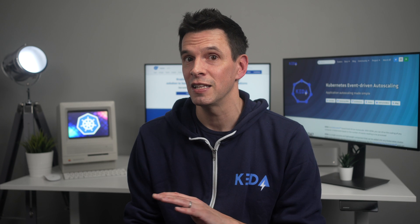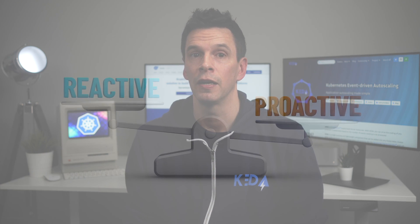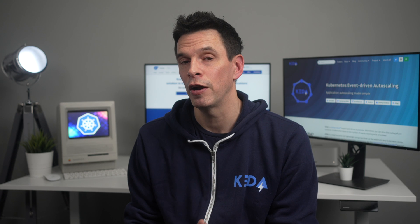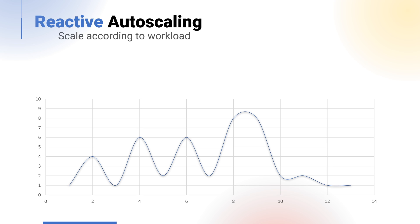With autoscaling, there are different approaches and combinations that may be used by an organization. Firstly, reactive autoscaling — this could be triggered when metrics hit a given threshold and we react to that threshold being reached. In this example, we have time along the bottom and a number of servers on the left-hand side. We're starting with one server, and as we hit a threshold, this then scales to four servers. As our workload decreases, we may react and go back to one server.